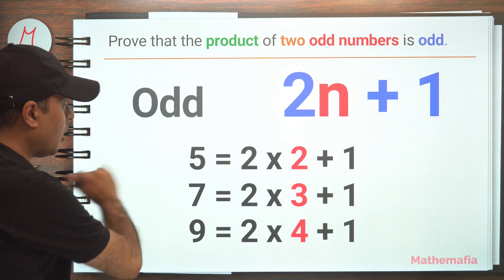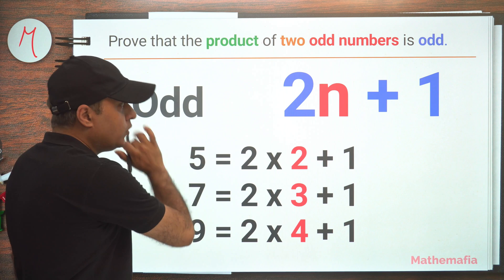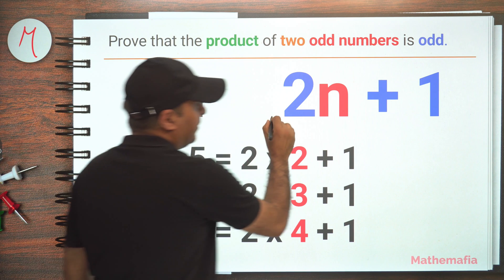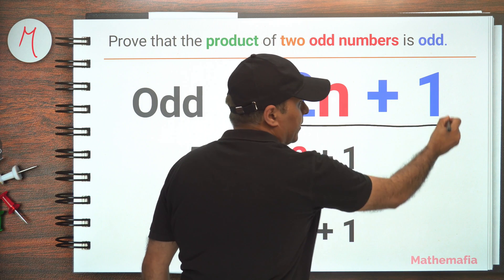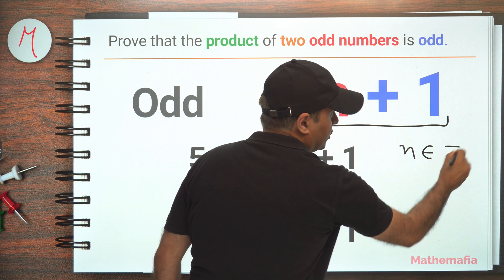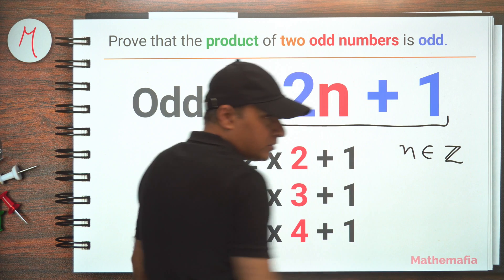So let's talk about the odd numbers first. We know that every odd number can be written in this form: 2n plus 1, where n is an integer. So n belongs to the set of integers.